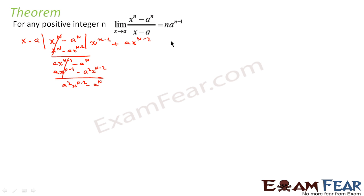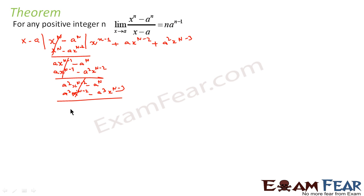Again, we have to multiply this with a²·x^(n-3). Why? Because a² times x^(n-3) times x equals a²·x^(n-2) — we have to cancel this. So what we get is a²·x^(n-2), minus what we will get this time: a³·x^(n-3). Again, if you cancel this, what you get is a³·x^(n-3) minus a^n. You can see there is a pattern here — this was n-1, this was n-2, this is n-3.